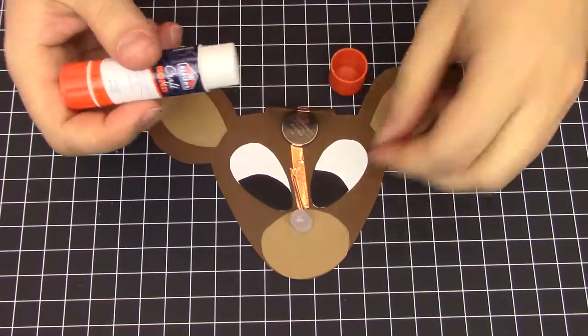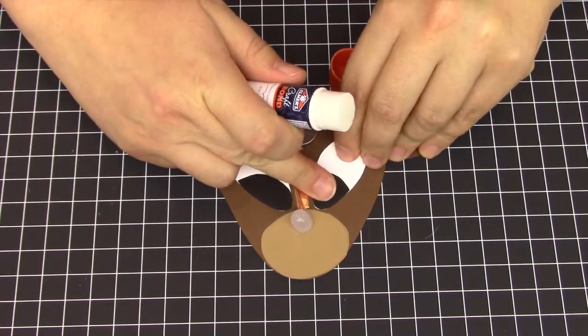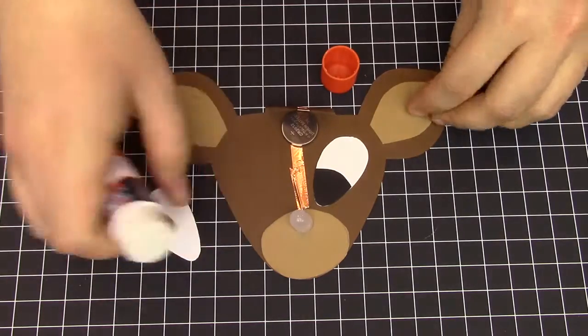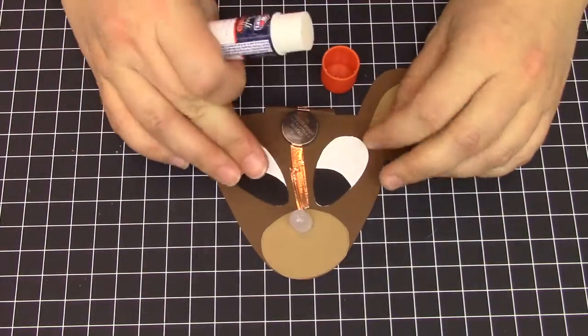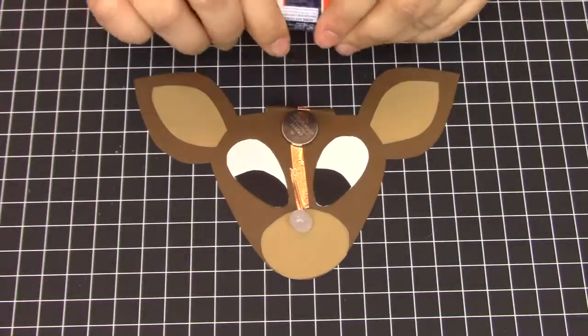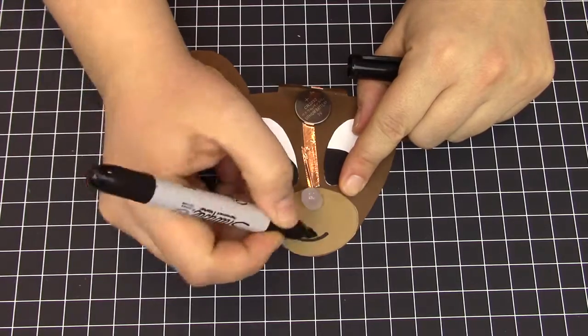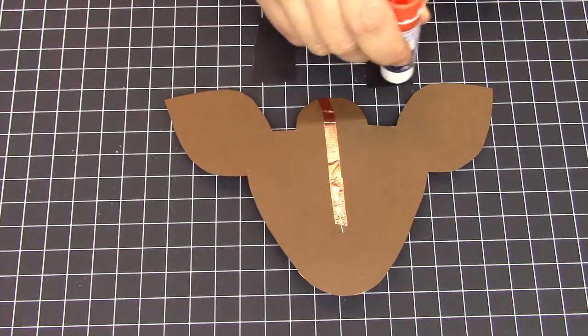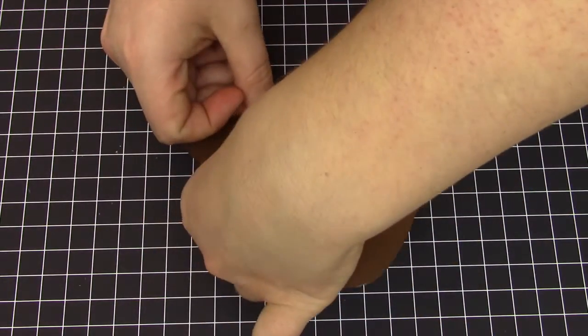Next, we will add decoration. Take the eyes and attach them with tape or glue to either side of the reindeer head. You can add a mouth using the sharpie. And attach the antlers using a small piece of tape or some glue to the back side of the reindeer head.